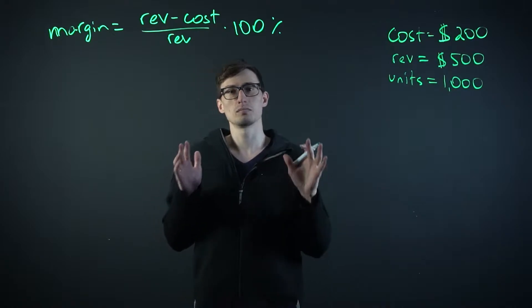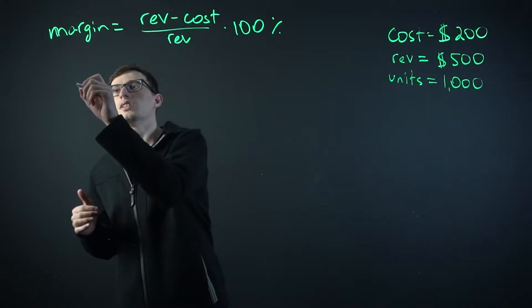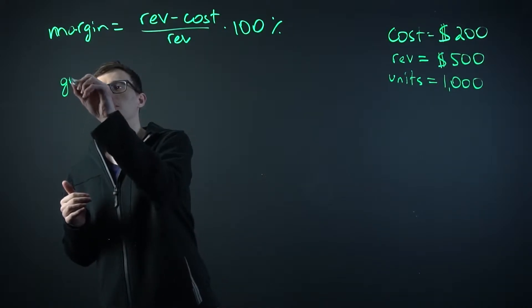Now, with the first profit margin, it's called gross. So the gross profit margin will be what?